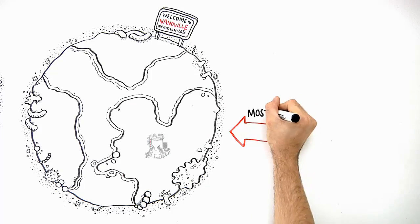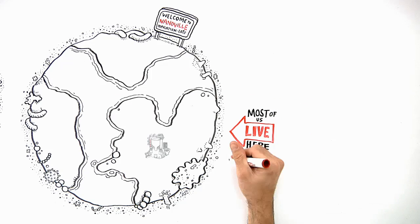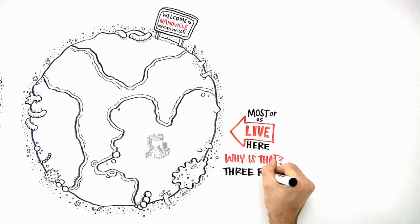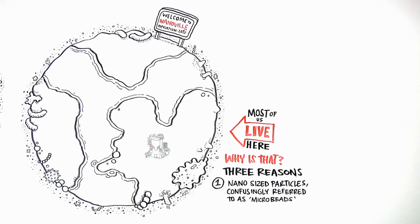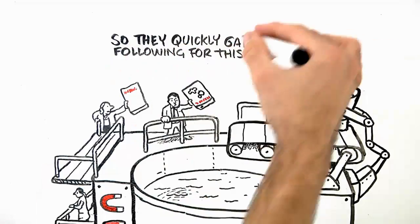Now, most of us live on the nano-sized planet of cell isolation. Why is that? There are three primary reasons. First, nano-sized particles, confusingly referred to as microbeads, were developed to be compatible with flow cytometry. So they quickly gained a following for this important application.